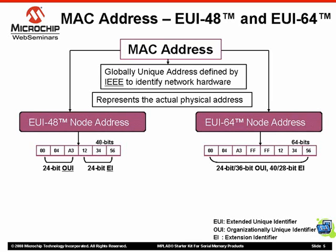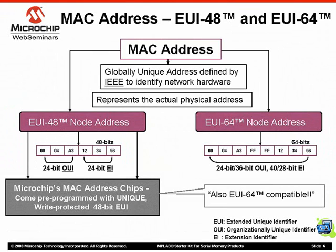The EUI-48 node address consists of a 24-bit OUI and a 24-bit EI, as you can see on the slide. EUI-64 consists of either a 24- or 36-bit OUI and a 40- or 28-bit EI, respectively. The EI in both cases is assigned by the organization. Microchip's MAC address chips come with uniquely pre-programmed and write-protected 48-bit EUI addresses, and these EUI-48 node addresses from Microchip are also compatible as EUI-64, as we will see next.